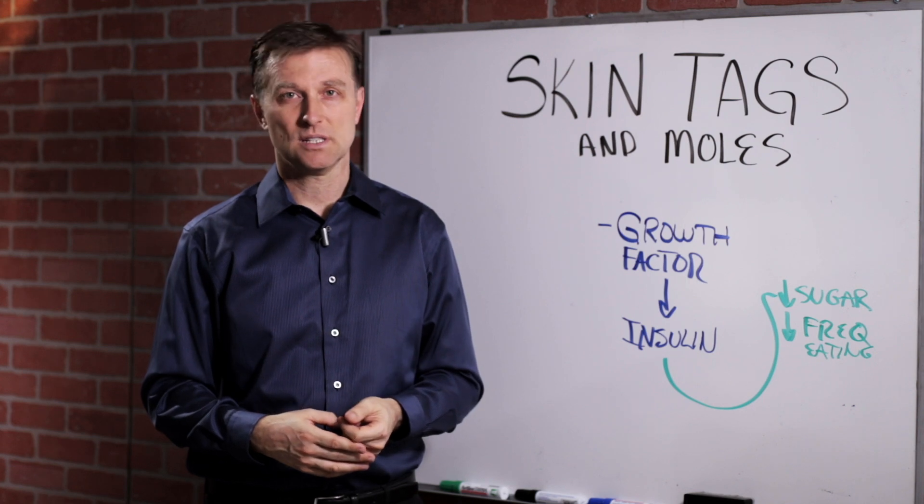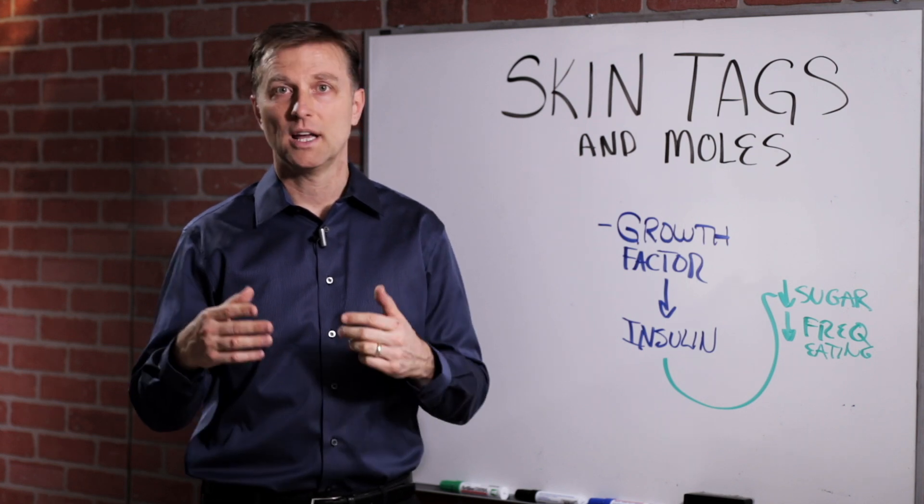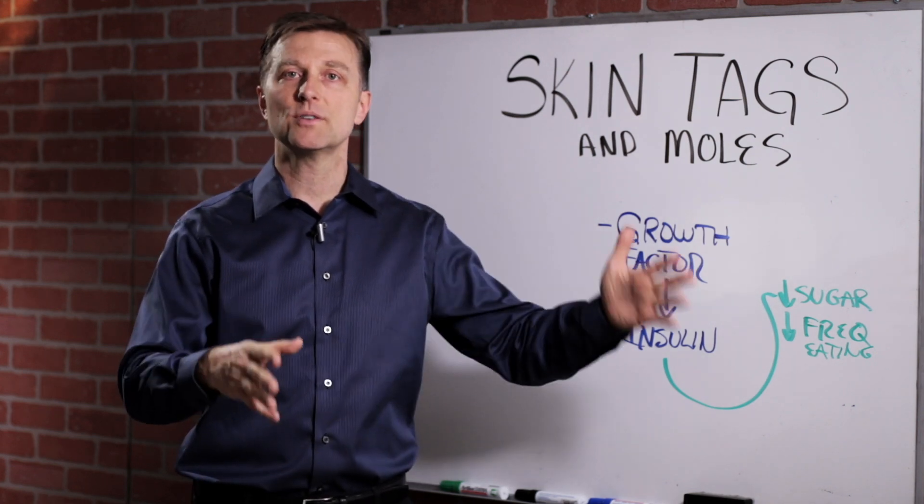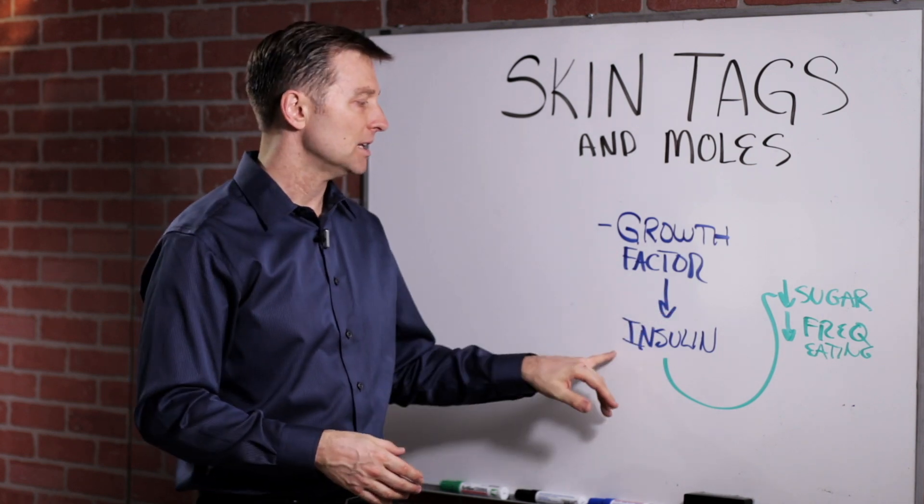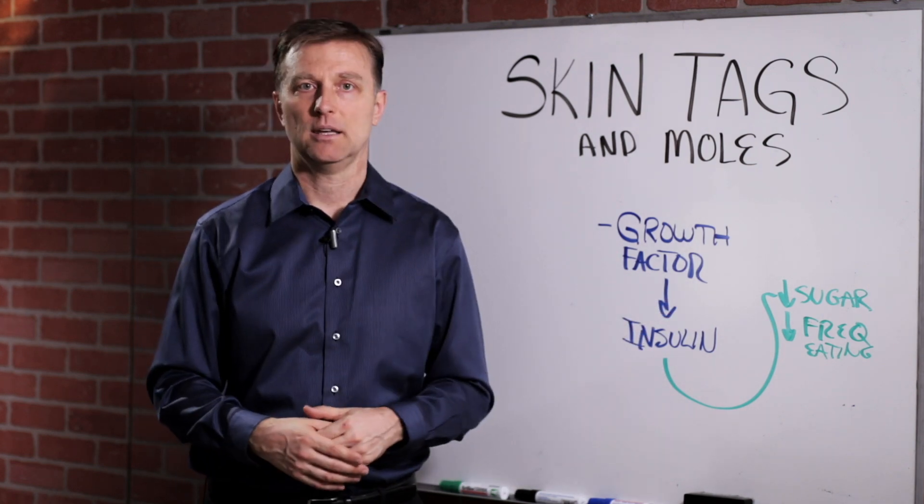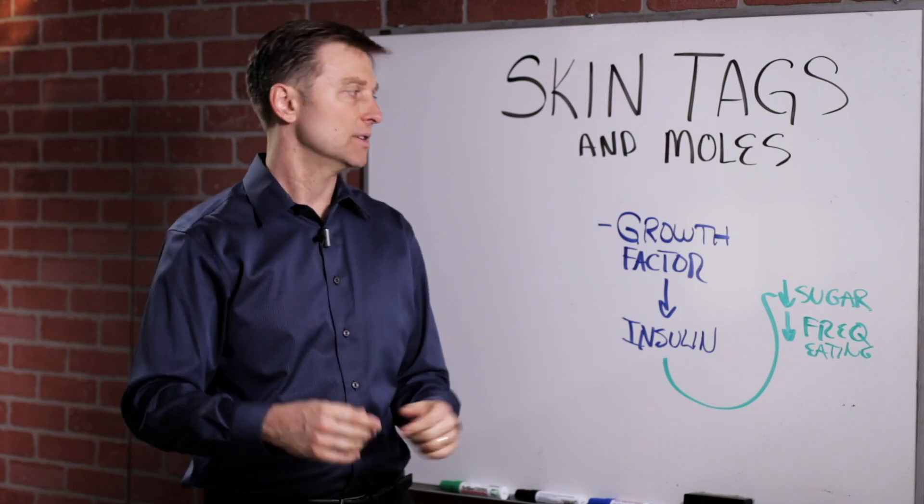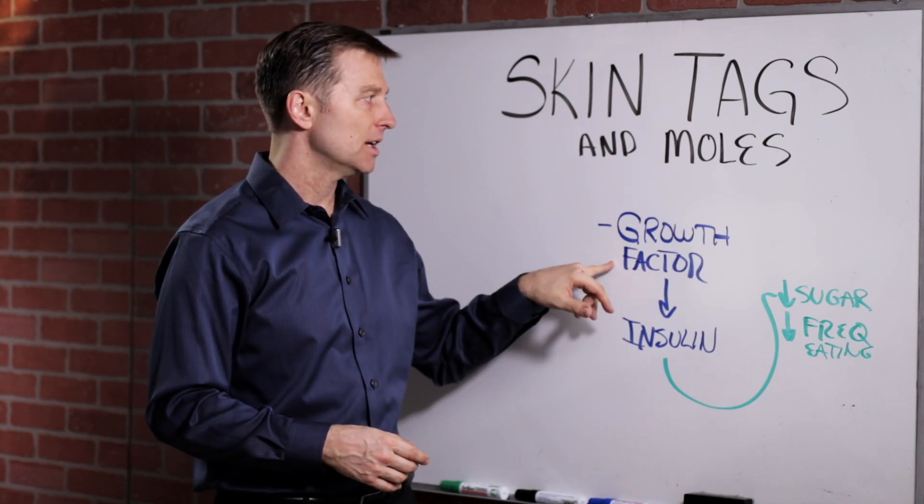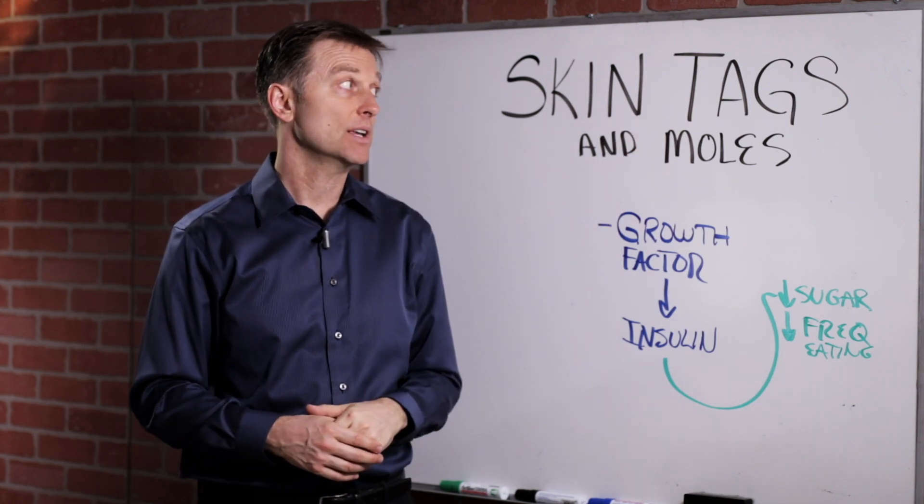An average person that has insulin resistance has five to seven times more insulin than a normal person. Because insulin is anabolic, it makes things grow, just like estrogen. It's a growth factor. It starts producing these items right here.